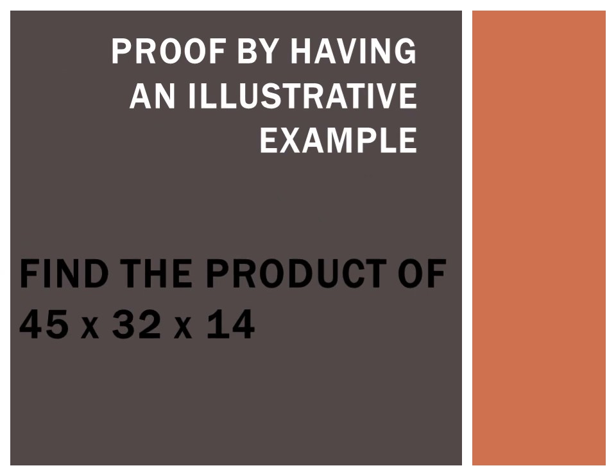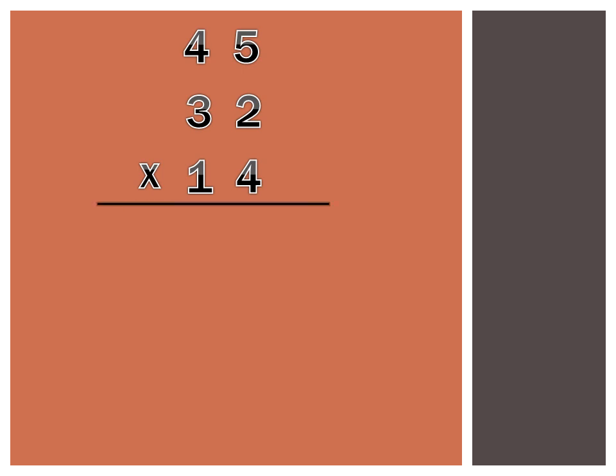For example, we have the following factors such as 45, 32, and 14. And we need to determine their product. What is then the product of 45 times 32 times 14? Could it be possible by multiplying these numbers simultaneously? Actually, we have four steps to follow in order to determine their product.